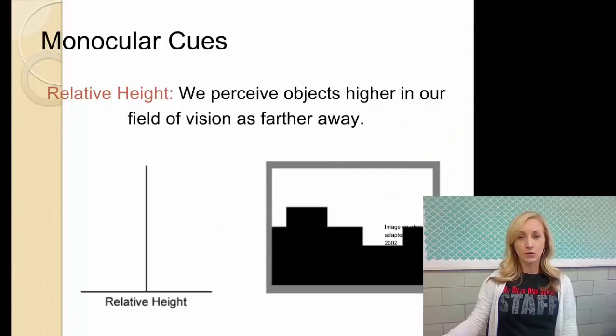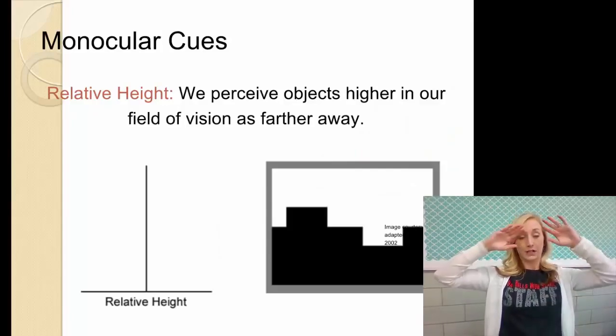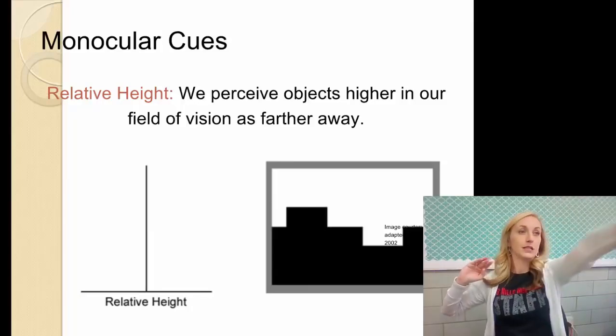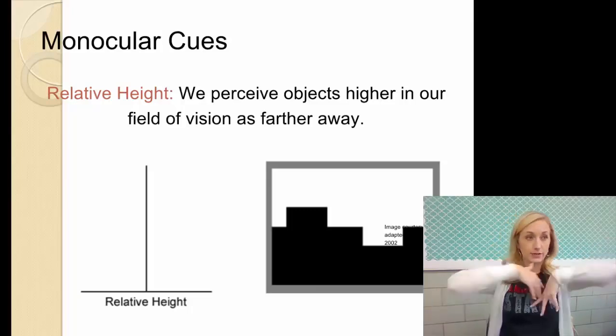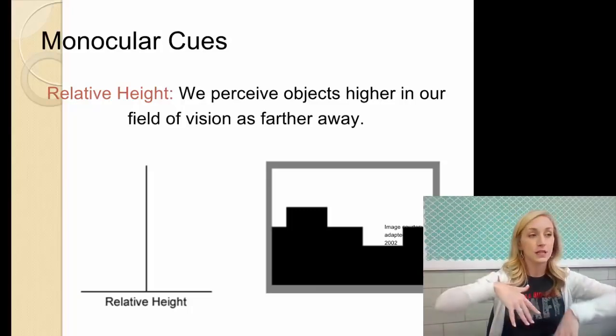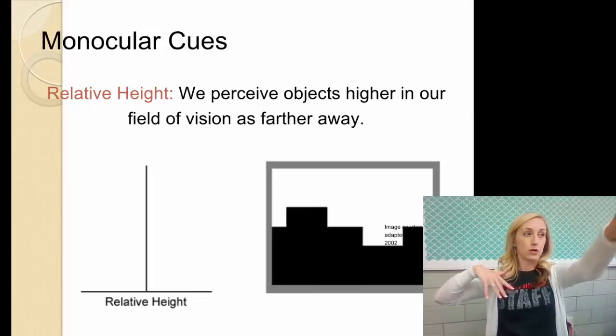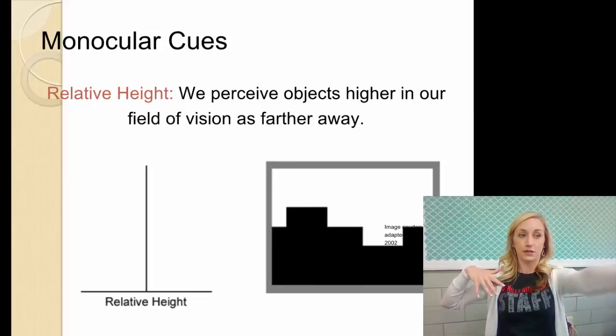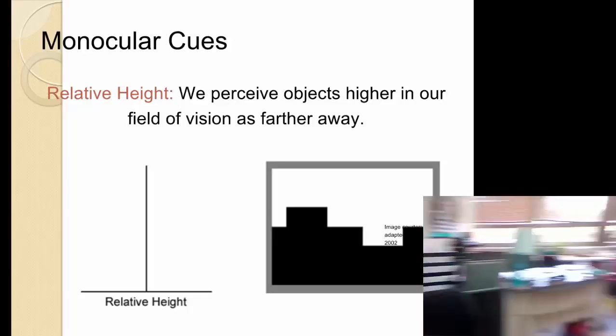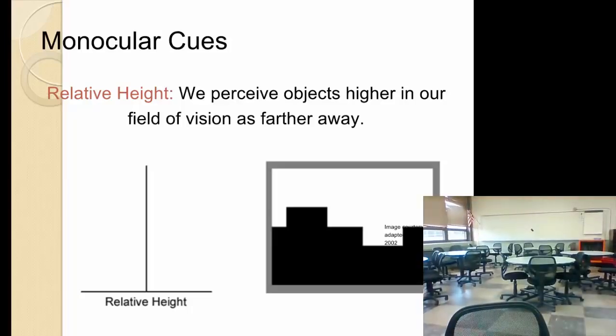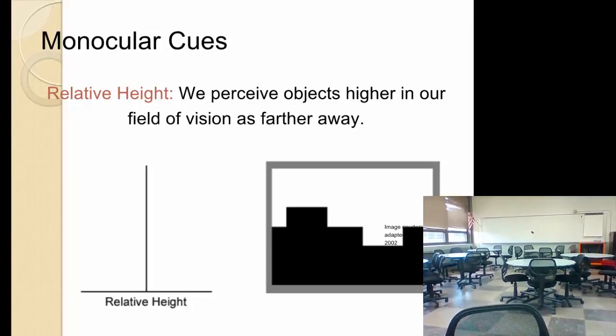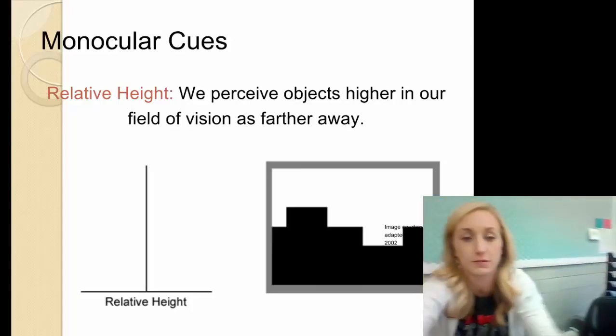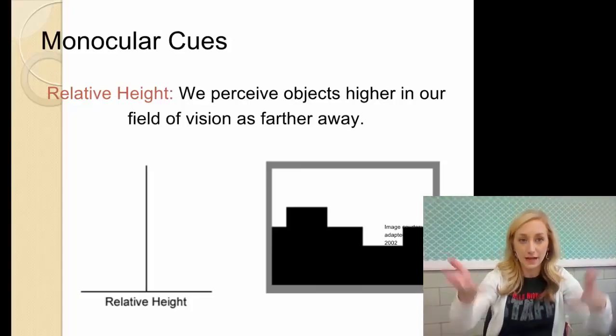Relative height. We perceive objects that are higher in our visual field as farther away. So if something is higher up, we perceive that to be farther away. So right now as I'm looking at my classroom, the whiteboard is higher in my visual field than these tables right here. I can show you. So those tables there are lower in the visual field than that whiteboard. Therefore, the whiteboard is farther away because it's higher in the visual field. And that shows relative height.